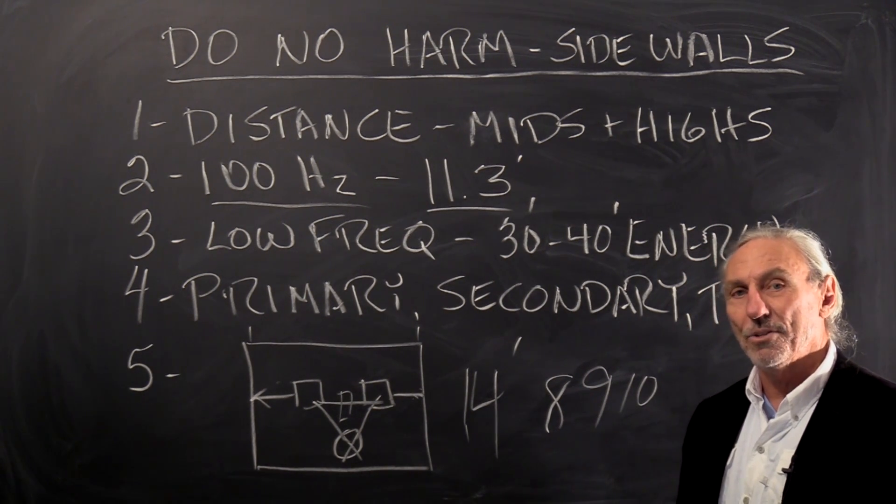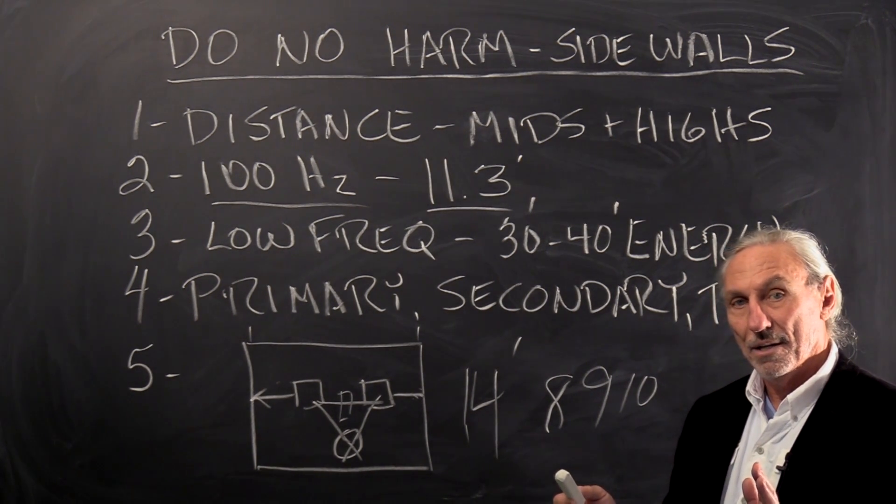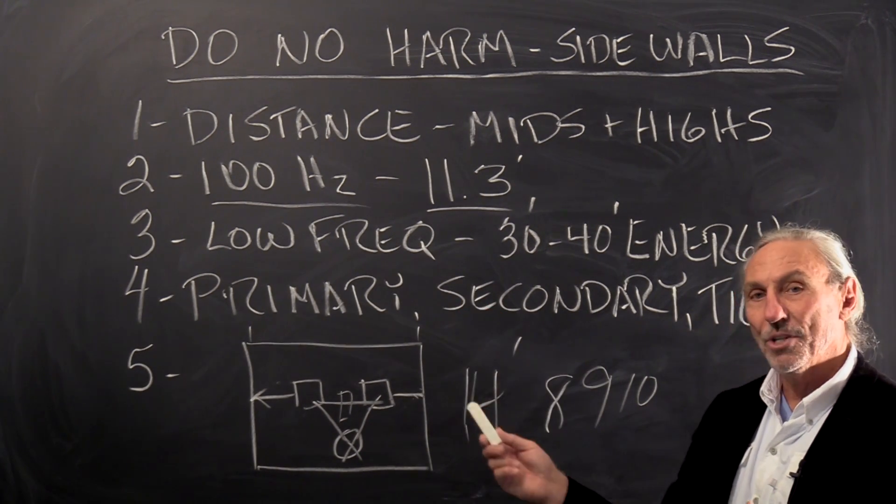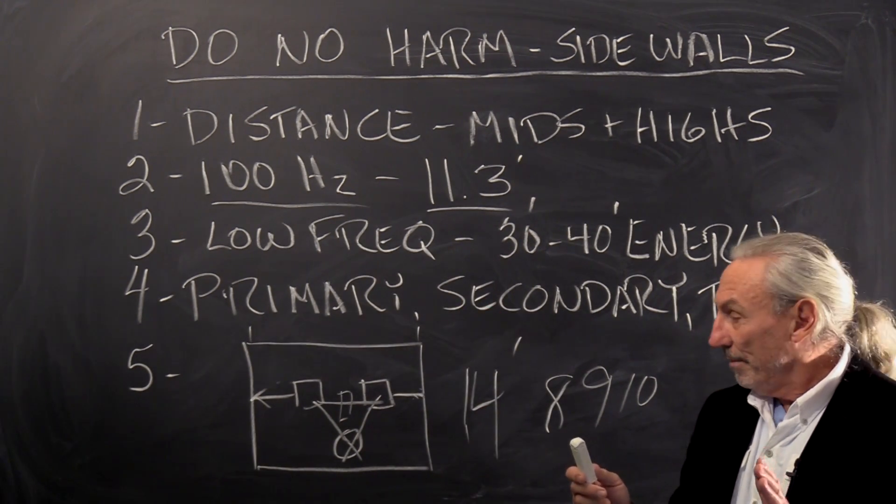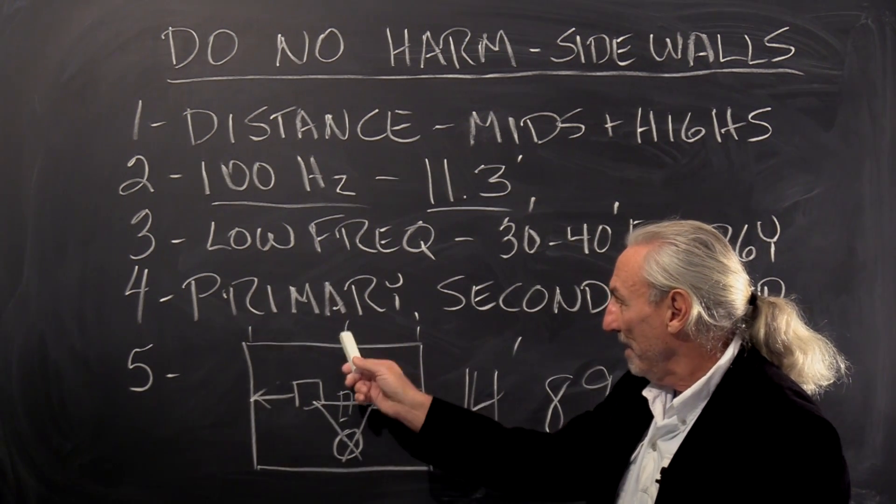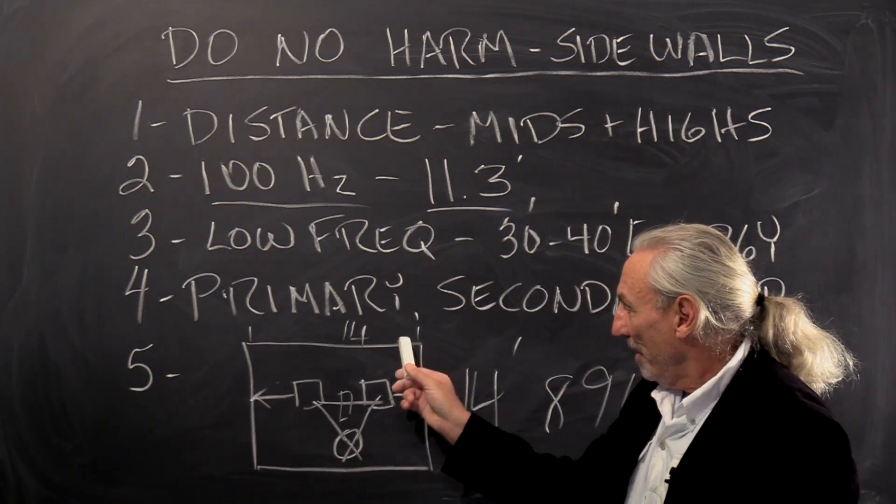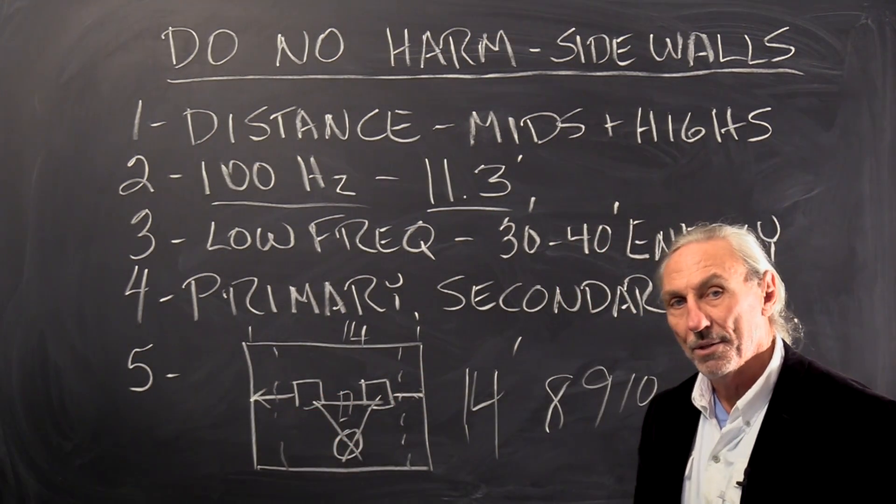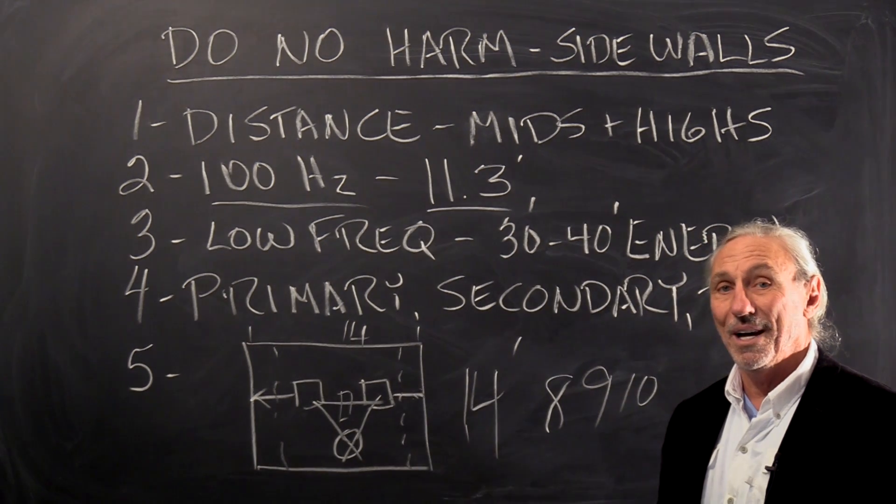The lower the frequency problem based on dimension, the thicker the treatment requirement. Let's say in our room here that's 14 feet wide, we have a low frequency problem, so we have to treat this sidewall with low frequency material.